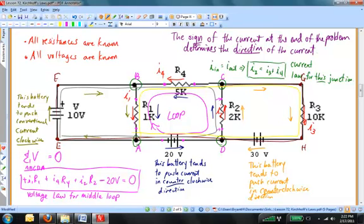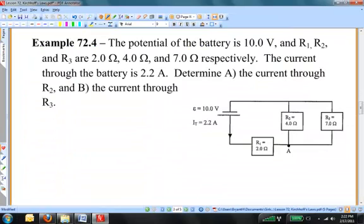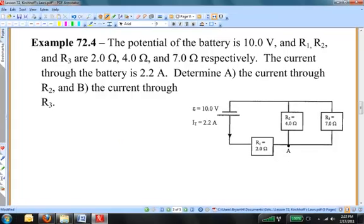Your textbook examples are not as tough as this one that we're looking at here. So let's look at one of them and then move on to another example of my own making. Example 72.4. The potential of the battery is 10 volts and R1, R2, and R3 are 2 ohms, 4 ohms, and 7 ohms, respectively. The current through the battery is 2.2 amperes. Determine A, the current through R2, and B, the current through R3.